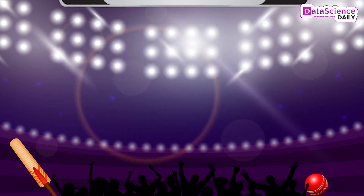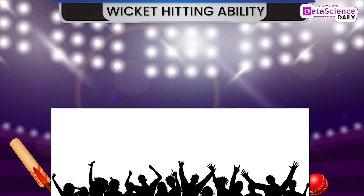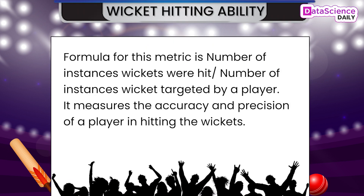Wicket Hitting Ability — the formula for this is: number of instances wickets were hit divided by number of instances a wicket was targeted by a player. It measures the accuracy and precision of a player in hitting the wickets.